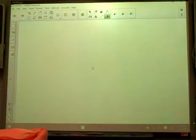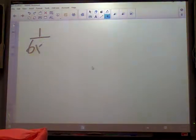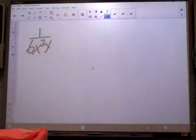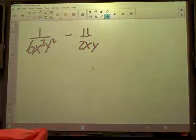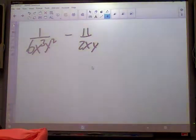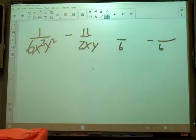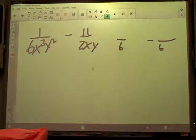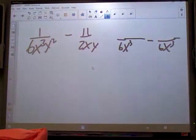We've got 1 over 6x cubed y squared minus 11 over 2xy. Alright, coefficients first. What will 6 and 2 both go evenly into? 6. So we know we're going to have a 6 in our denominator. What about x cubed and x? What will they go evenly into? X cubed. So we're going to have an x cubed. What about y squared and y? What will they go evenly into? Y squared. Good job.